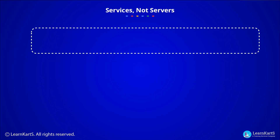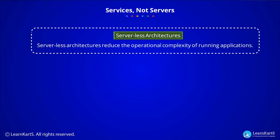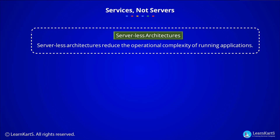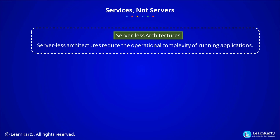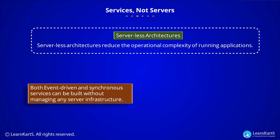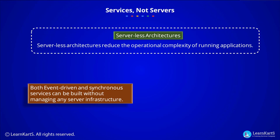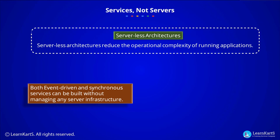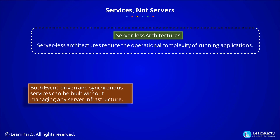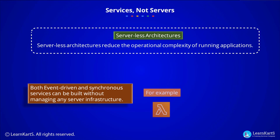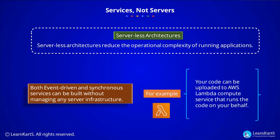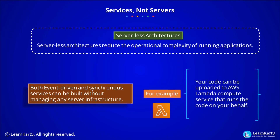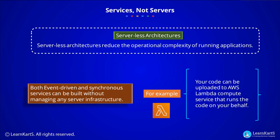Another way to reduce the operational complexity of running applications is through serverless architecture. It is possible to build both event-driven and synchronous services for mobile, web, analytics, and the Internet of Things without managing any server infrastructure. For example, your code can be uploaded to AWS Lambda, a compute service that runs the code on your behalf.